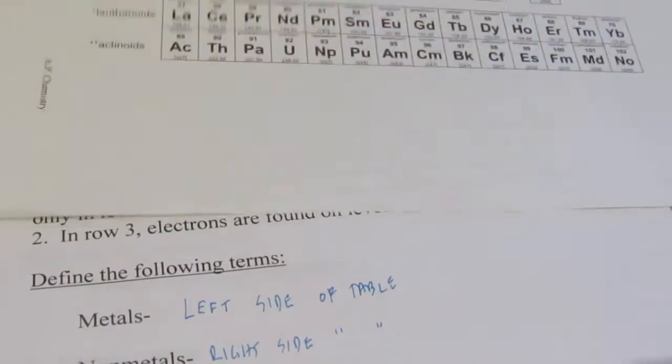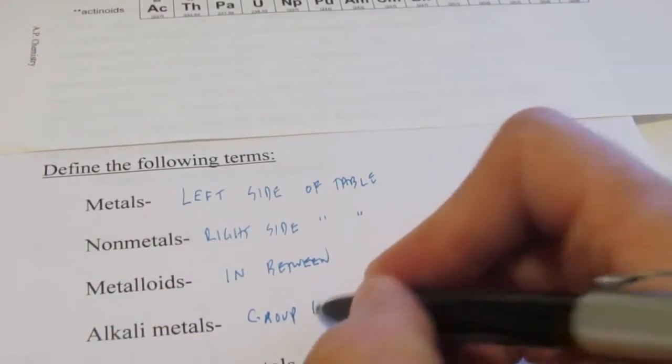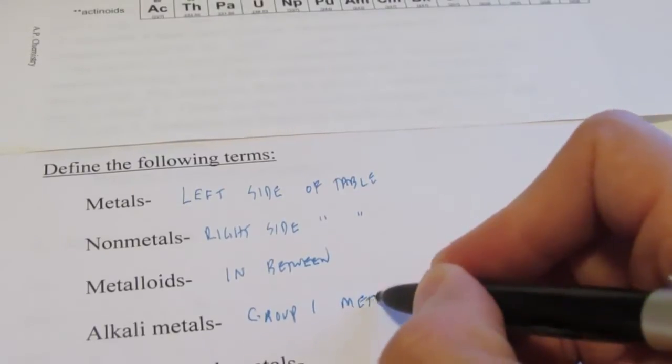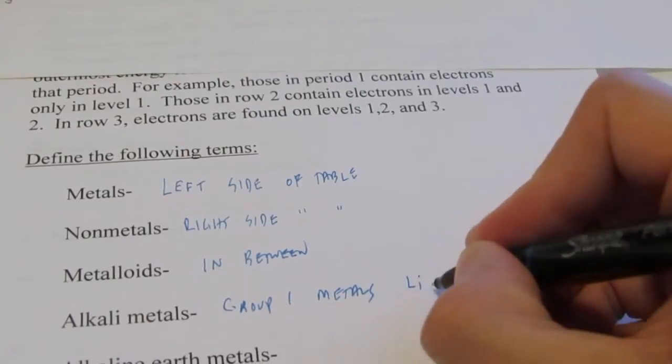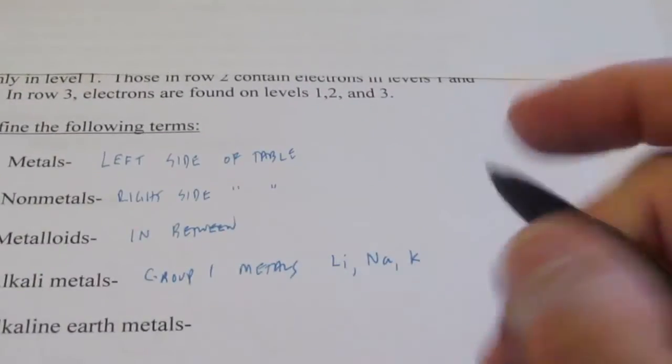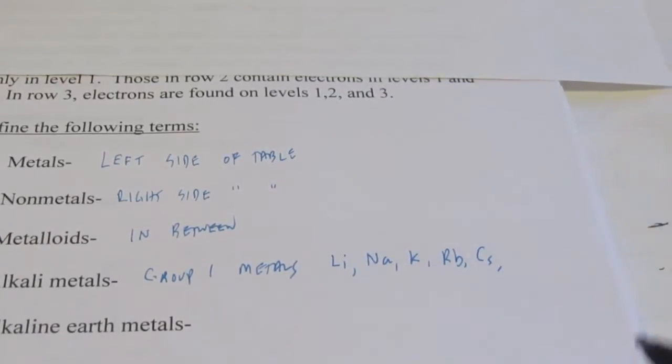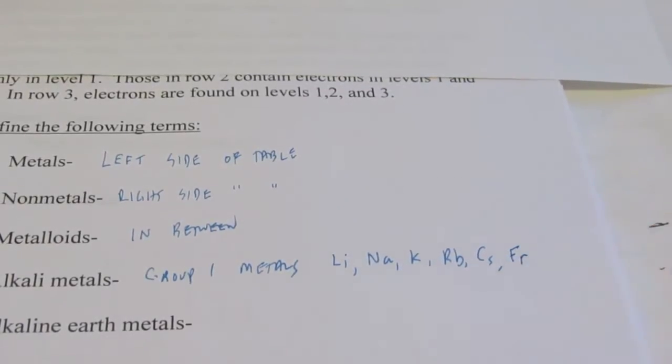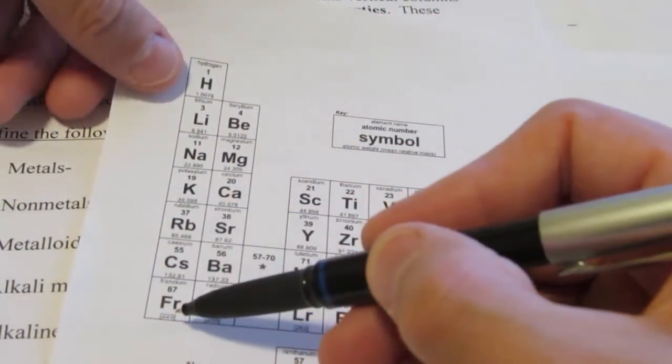Now the alkali metals are the group 1 metals. That would be lithium, sodium, potassium, rubidium, cesium, and the rarest of all elements, francium. They are the group 1 metals and they are called the alkali metals.